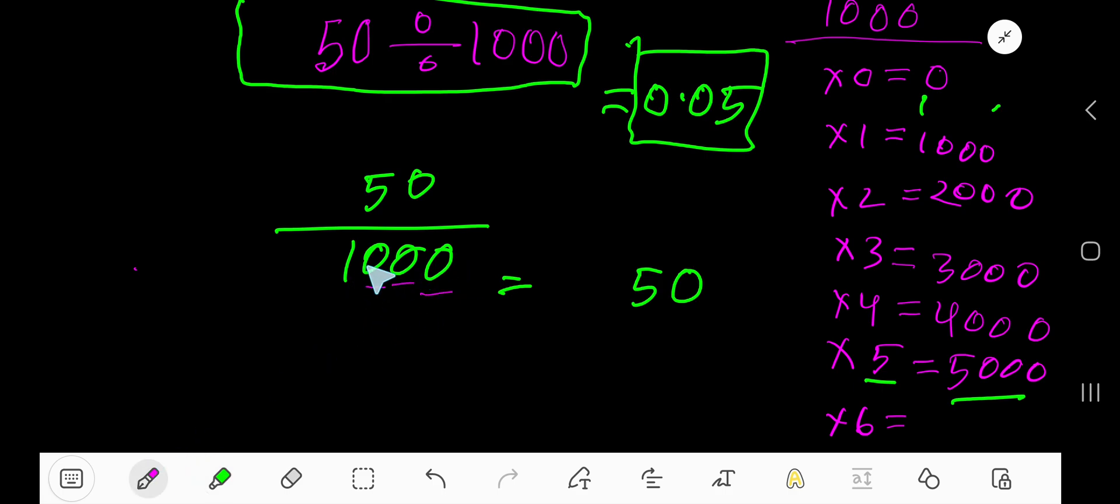.05 is the answer. This zero actually doesn't have any value - you can write 0.05.